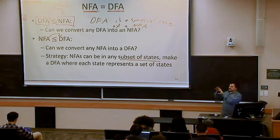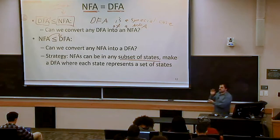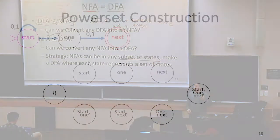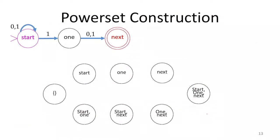The idea is: how can we make being in one state represent being in several states? Each state represents a subset of states. So with a three-state automaton, I need one state for every subset of those three states — that gives me eight states, since the power set of a set of size three has two-to-the-three, which is eight, elements.